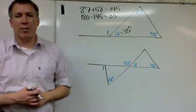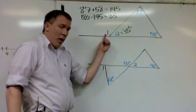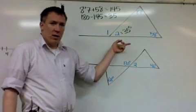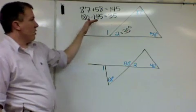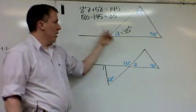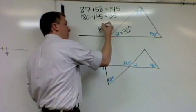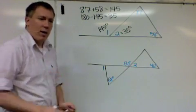Well, likewise, angle 1 and angle 2, they have to add to 180 because this is a line. So if that's 35, and it took 145 plus 35 to make 180, and this is 180, that means angle 1 has to be 145, because 145 plus 35 is 180.